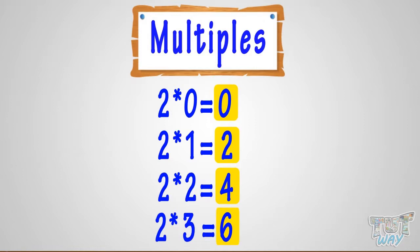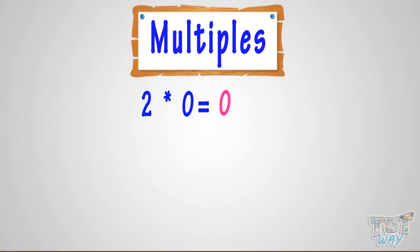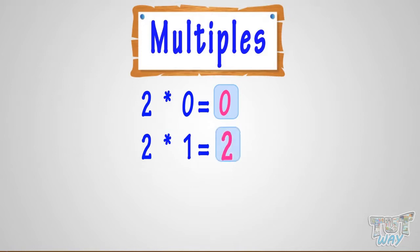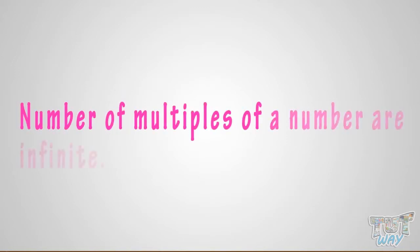There is no end to the number of multiples of a number. 0 and the number itself are multiples of every number. For example, 15 multiplied by 0 equals 0, so 0 is a multiple of 15. 15 multiplied by 1 equals 15, so 15 is a multiple of 15. The number of multiples of a number are infinite.